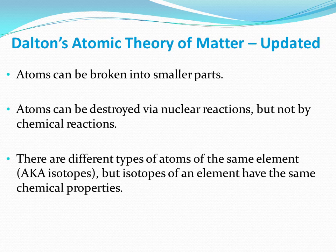The masses are a result of the sum of the protons plus the neutrons. Different isotopes have different numbers of neutrons. However, isotopes of an element have the same chemical properties.